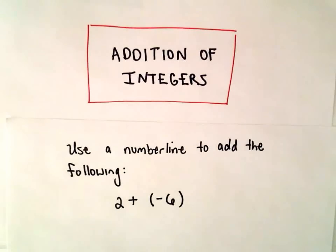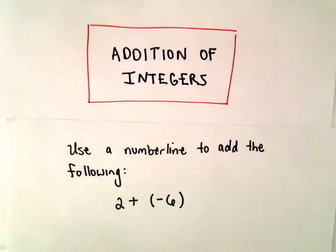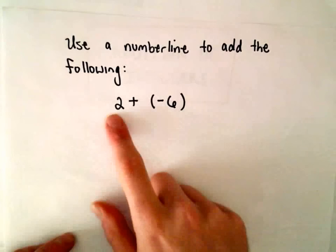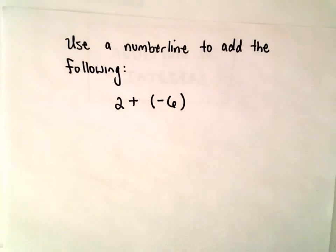Alright, another example here involving addition of integers, and here we're just going to use a number line to add positive 2 plus negative 6.